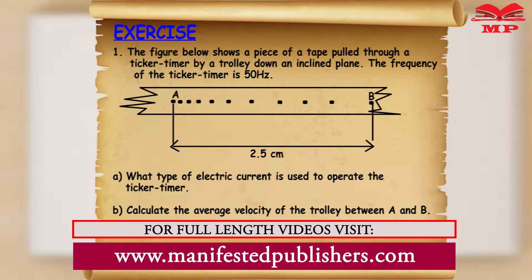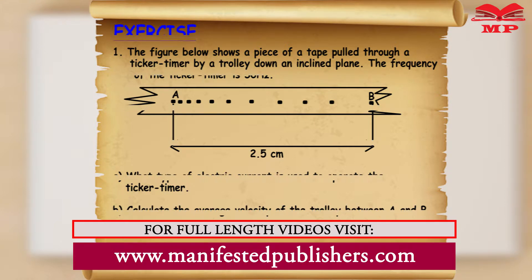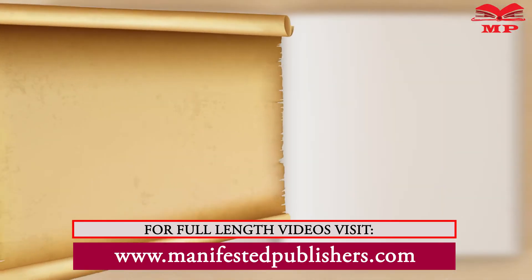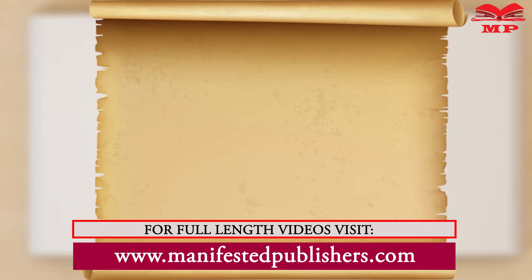Part B: calculate the average velocity of the trolley between A and B.